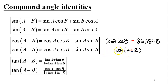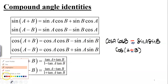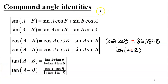However, if we're subtracting a and b inside cosine — finding cosine of a minus b — we add the two terms: cosine a cosine b plus sine a sine b. This is how the identity works, and we'll prove it in another lesson.